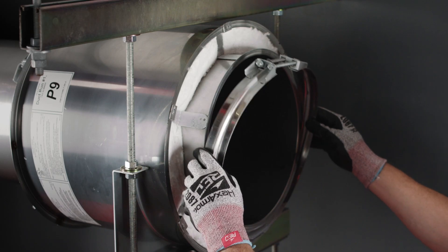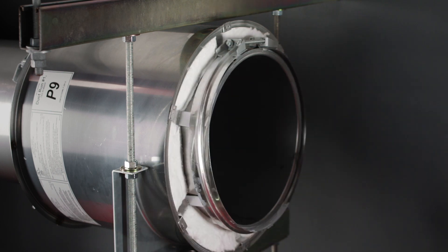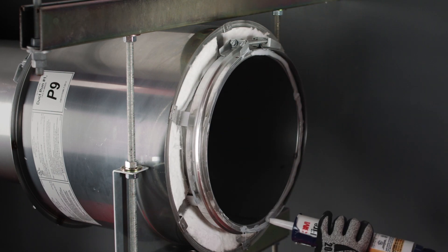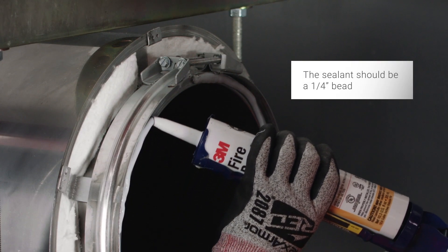Place the V-band just past the duct flange, leaving enough room for the next duct section. Apply a continuous quarter-inch bead of sealant around the flange to be joined. The sealant should be about the width of a pencil.